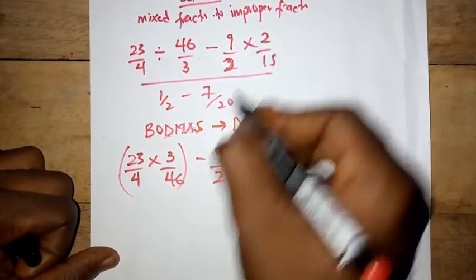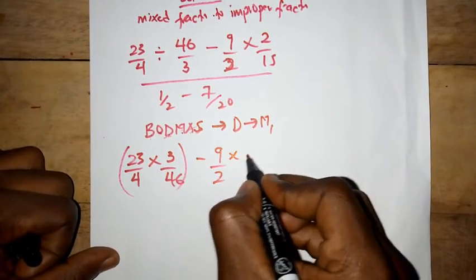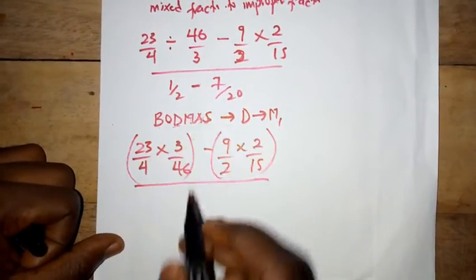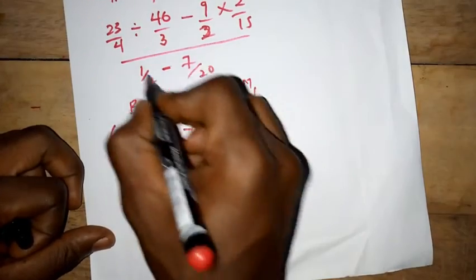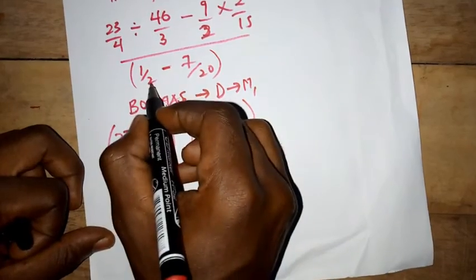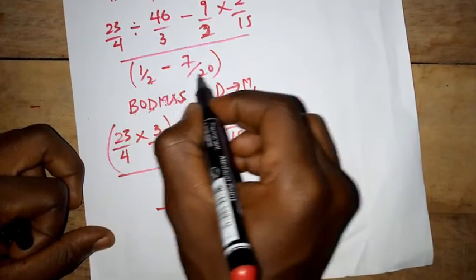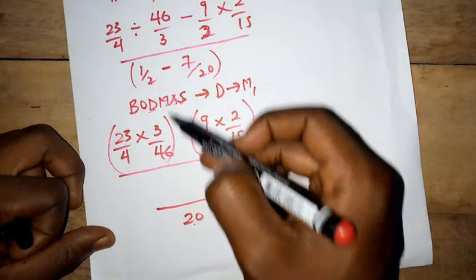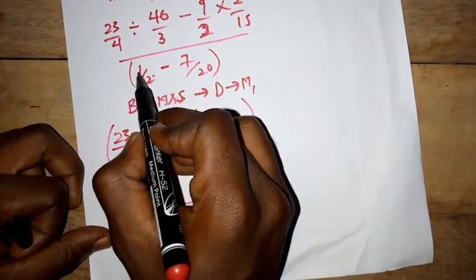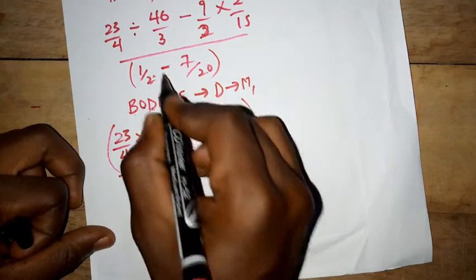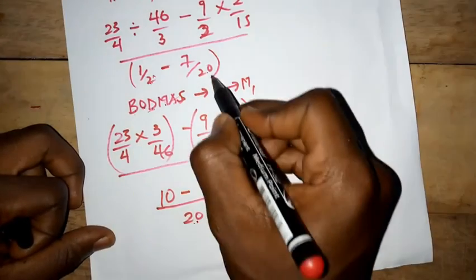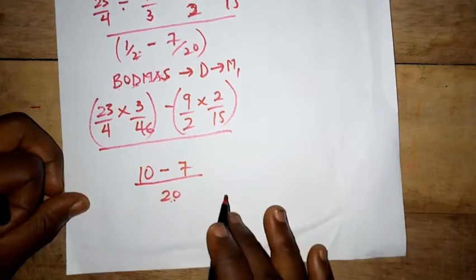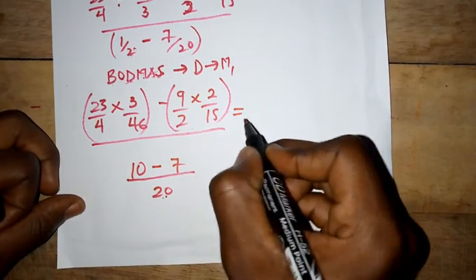We can deal with the subtraction part now. We need to find the LCM. The LCM of 2 and 20 is 20. So 20 divided by 2 is 10, and 10 times 1 is 10. Then we have the minus sign: 20 divided by 20 is 1, and 1 times 7 is 7.